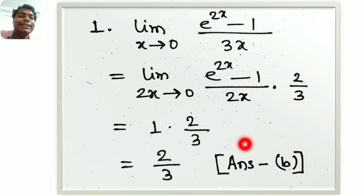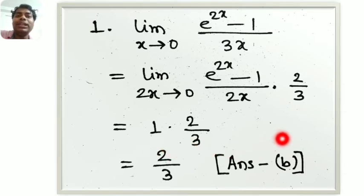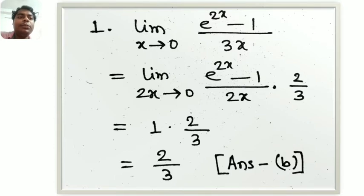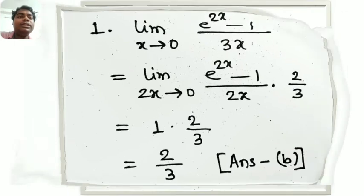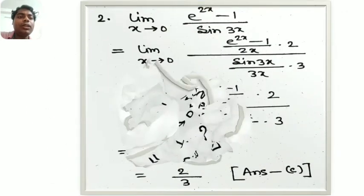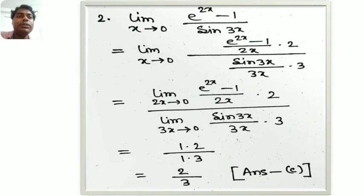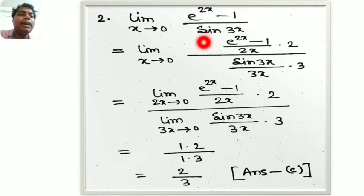When x tends to 0, 2x tends to 0. So limit 2x tends to 0 of e to the power 2x minus 1 by 2x — this is the standard formula with value 1 — multiplied by 2 by 3. So the answer is 2 by 3, which is option B. Next question: limit x tends to 0 of e to the power 2x minus 1 by sin 3x.